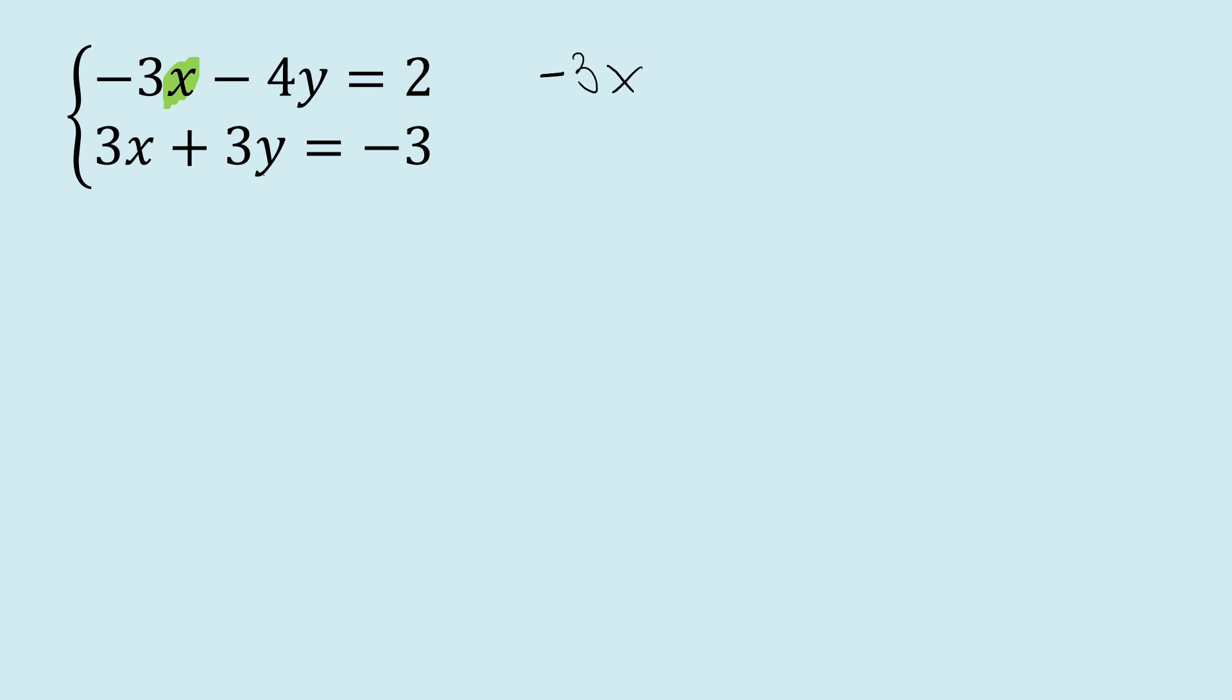So we'll have negative 3x minus 4y equals 2. To get that x by itself, I'm going to add 4y. Negative 3x equals 4y plus 2. Now let's divide by negative 3, and the negative 3s divide out.